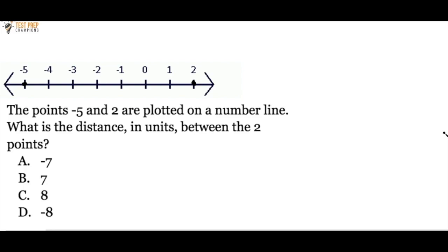The points negative 5 and 2 are plotted on a number line. What is the distance in units between the two points? Is it A, B, C, or D?